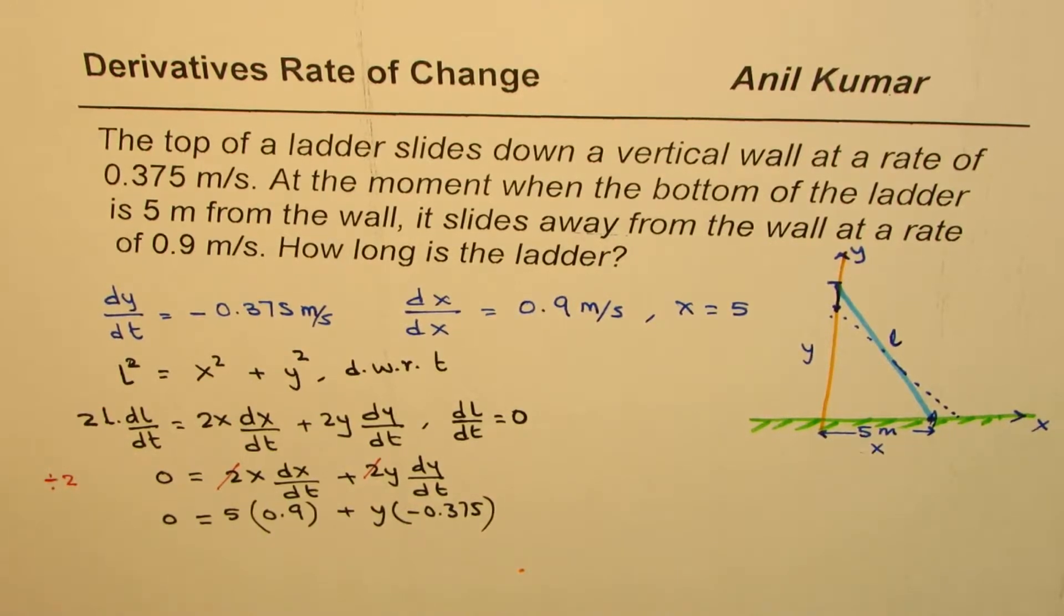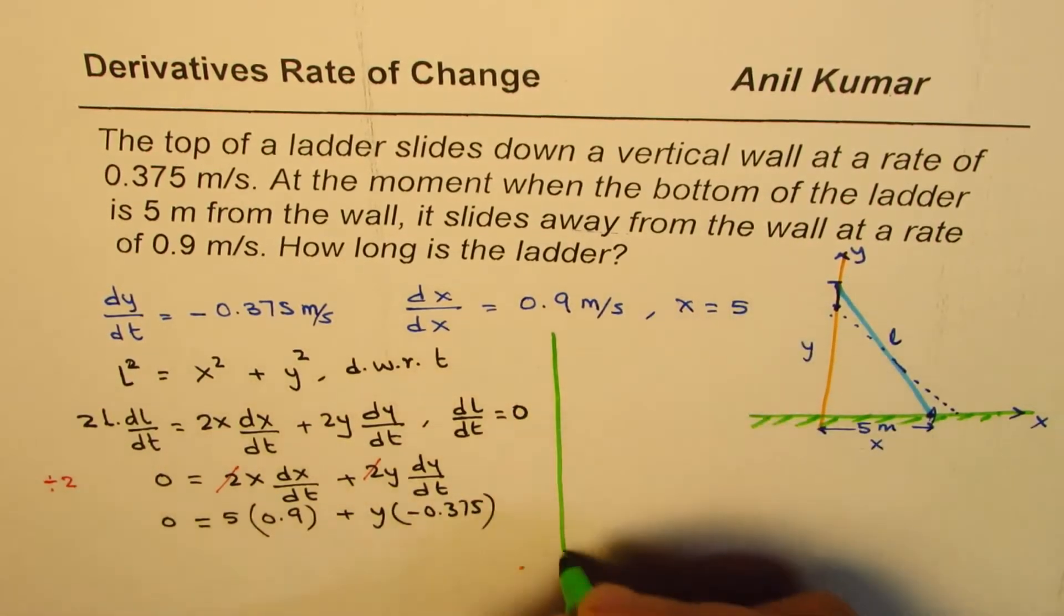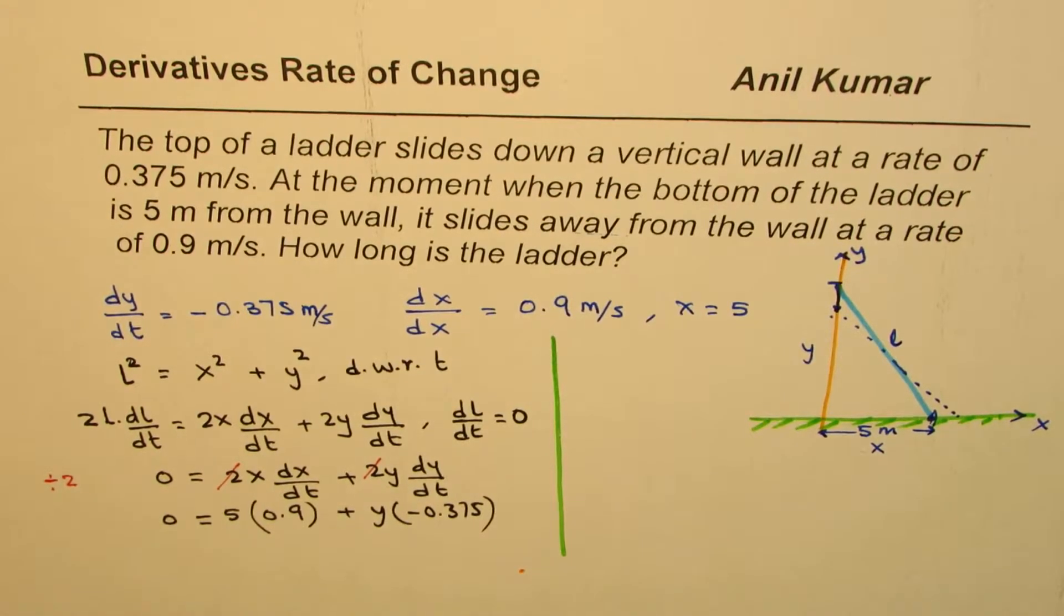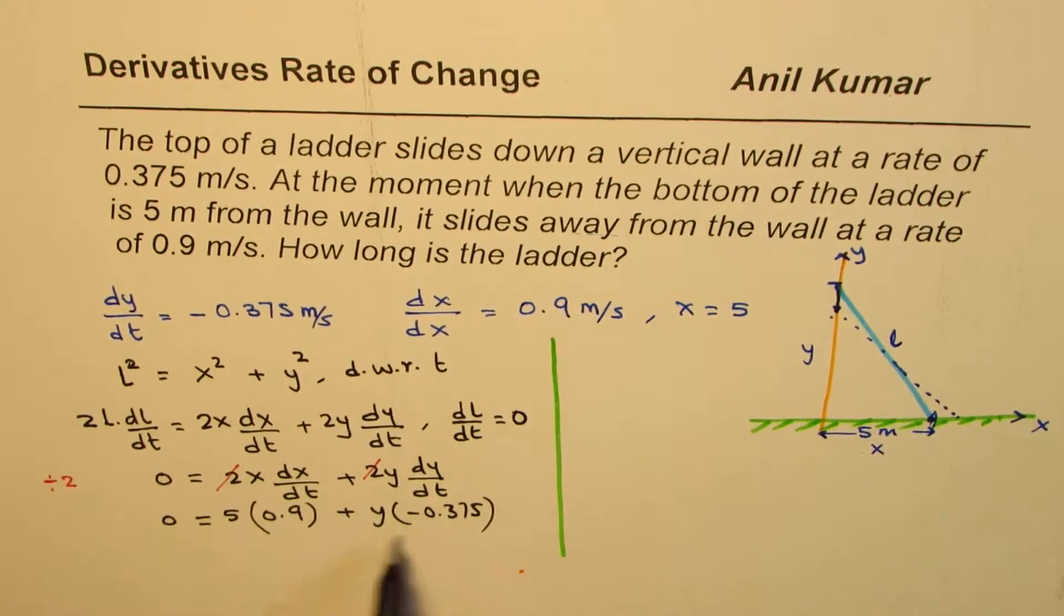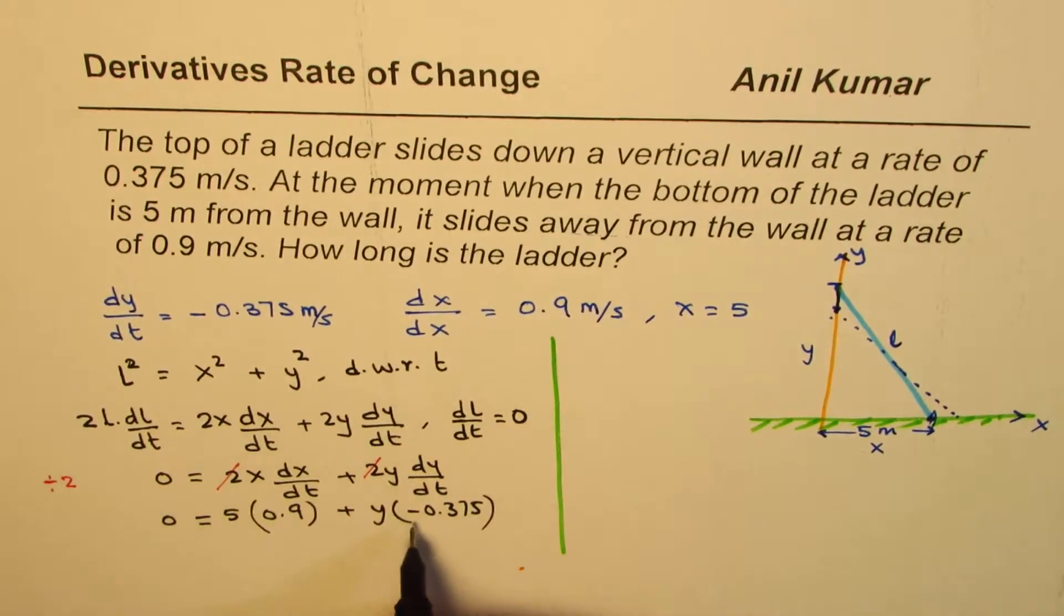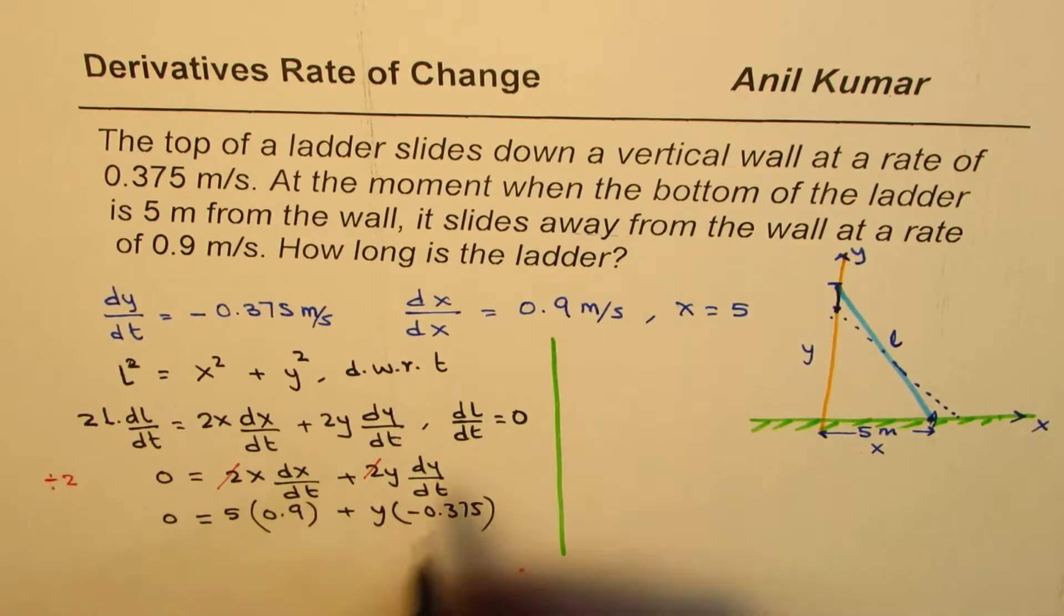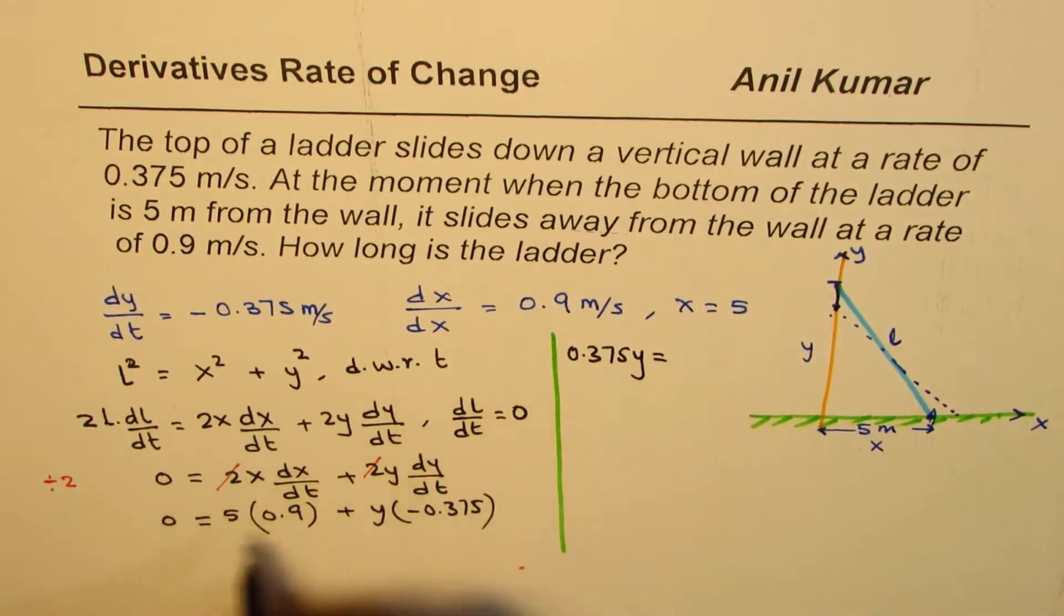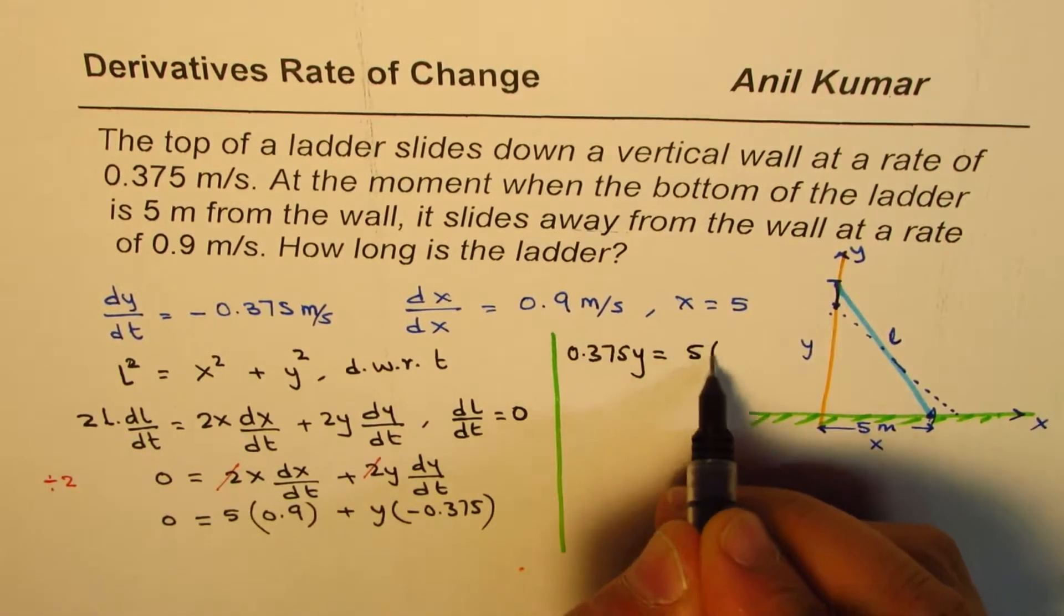Now we'll calculate y. So let's rearrange. So we get y... taking this on this side, we get 0.375y = 5 × 0.9.